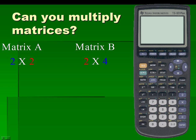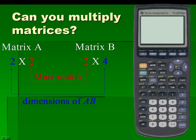The product A times B can be calculated because A has 2 columns and B has 2 rows, which must match. The dimension of the product A times B is a 2 by 4 matrix.